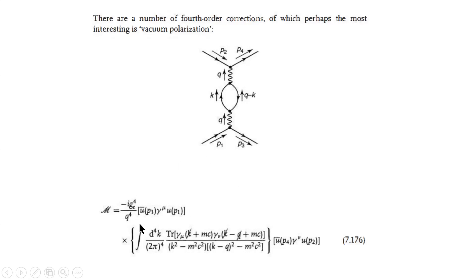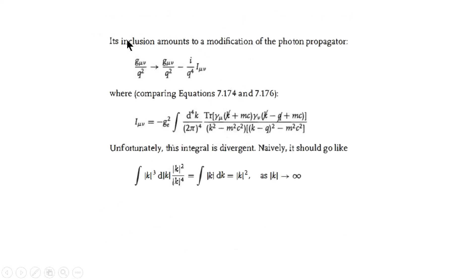It turns out that when you have a scattering amplitude you have a propagator and you must integrate it to get your answer. This integral diverges — you encounter a divergence, basically encountering infinity. The process of renormalization is to remove these infinities and obtain finite answers.